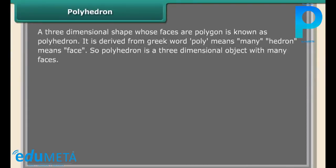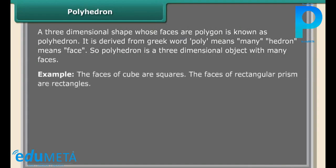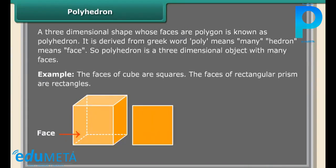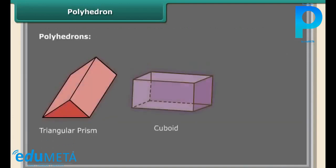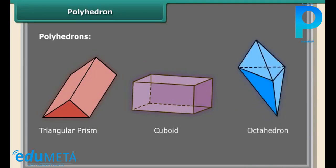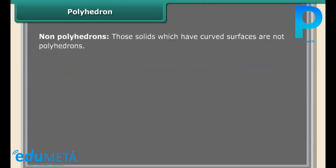Polyhedron. A three-dimensional shape whose faces are polygons is known as a polyhedron. It is derived from Greek word: poly means many, hedron means face. So polyhedron is a three-dimensional object with many faces. Example: the faces of a cube are squares. The faces of a rectangular prism are rectangles.